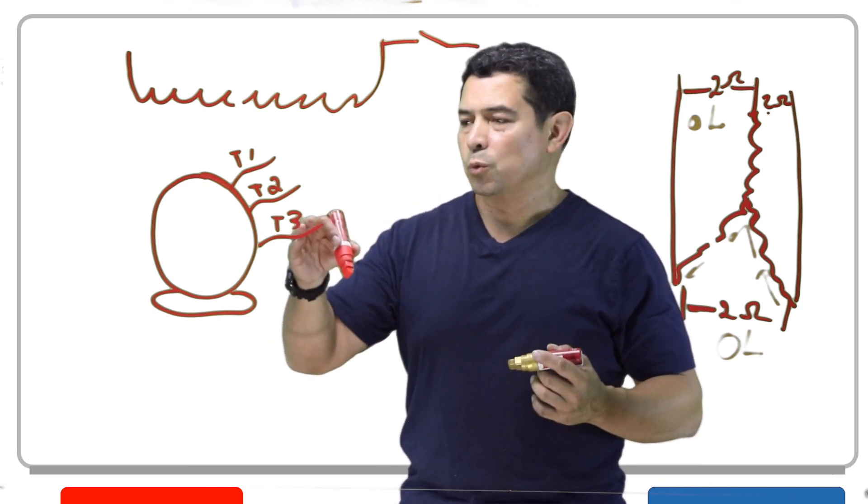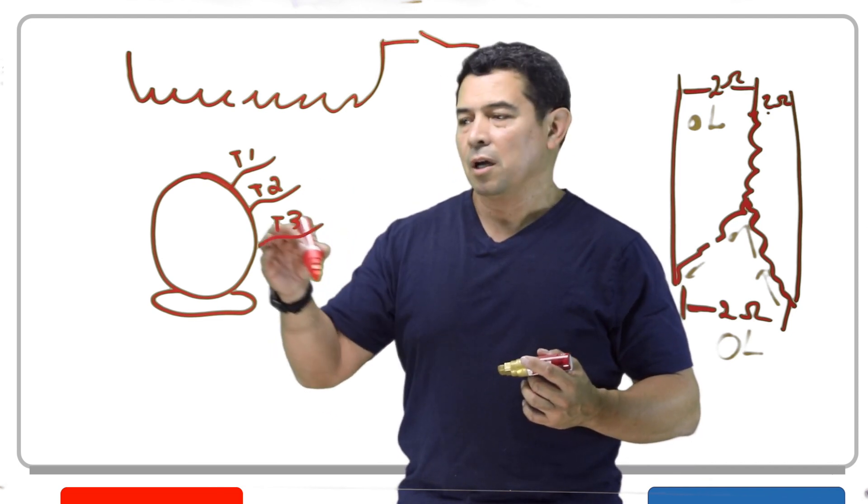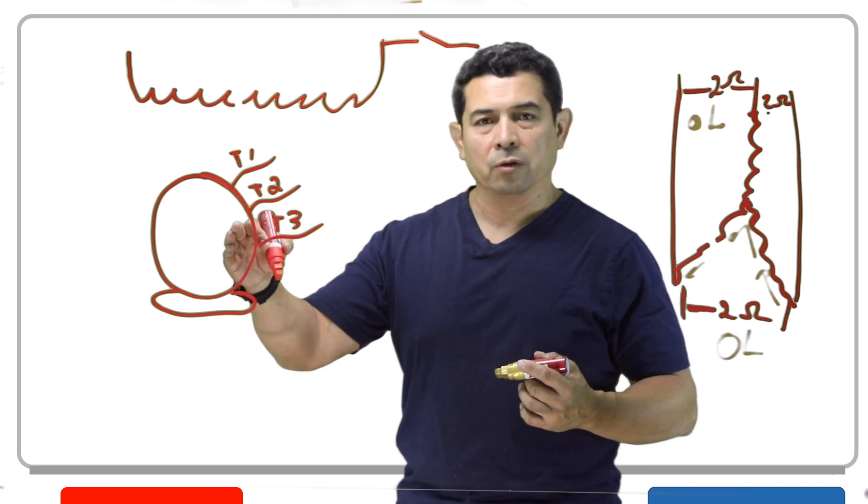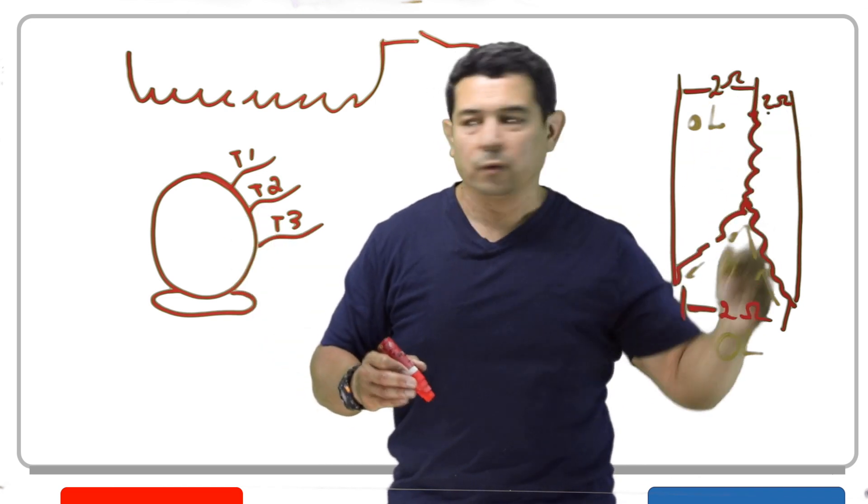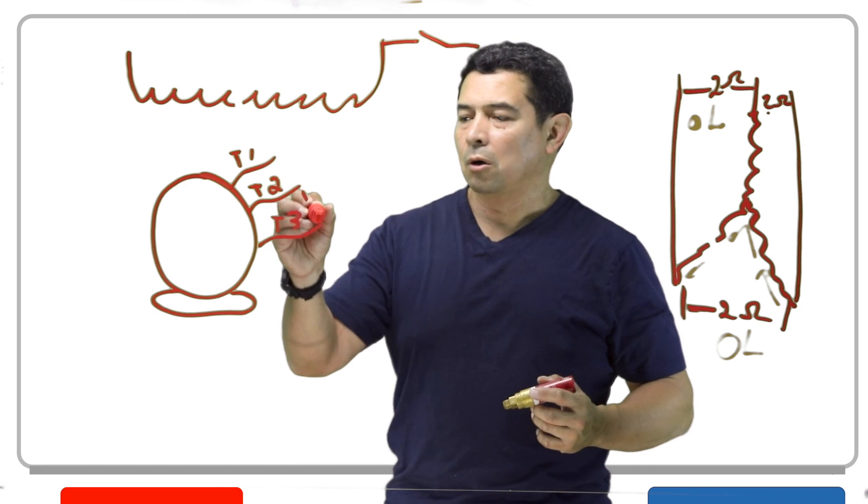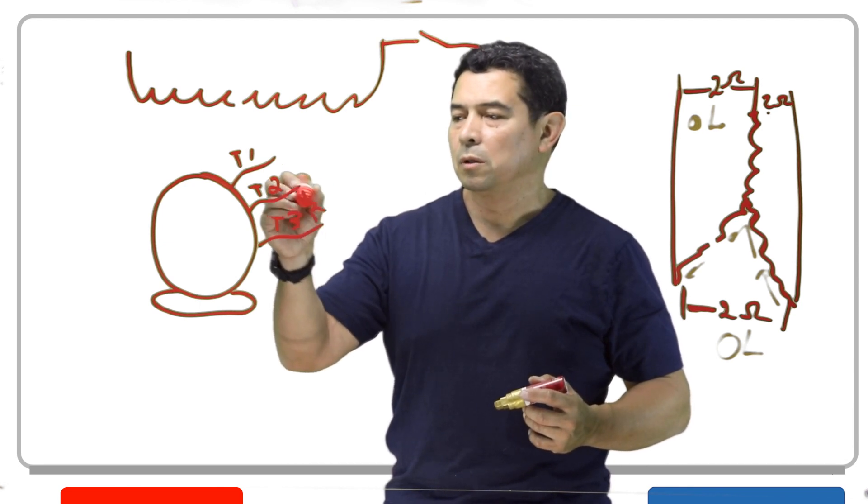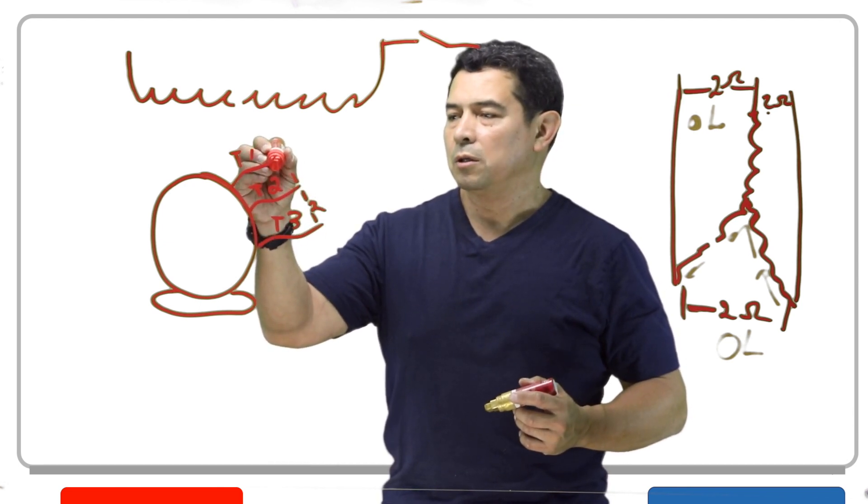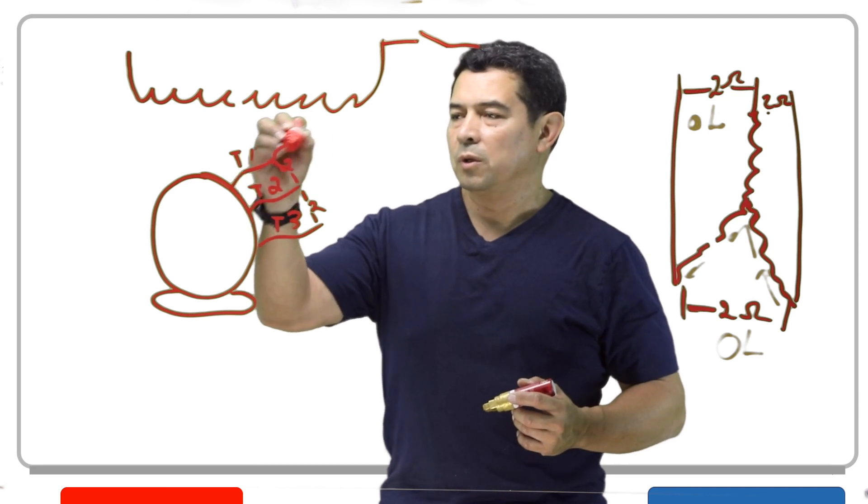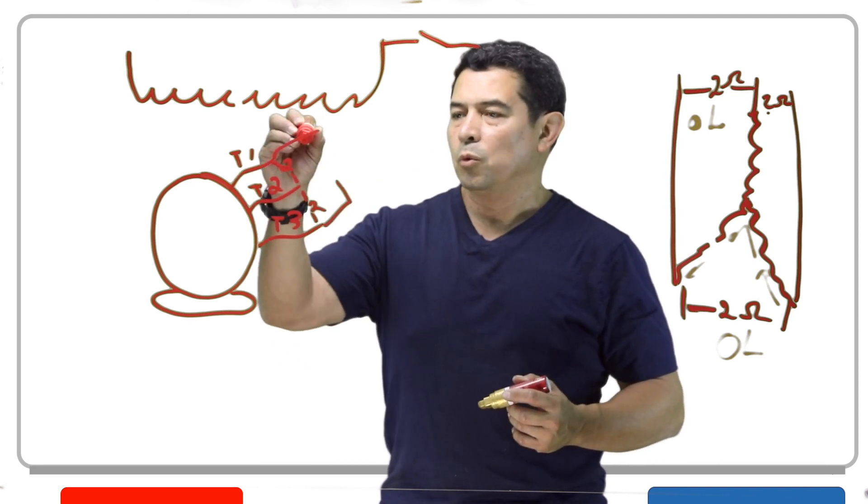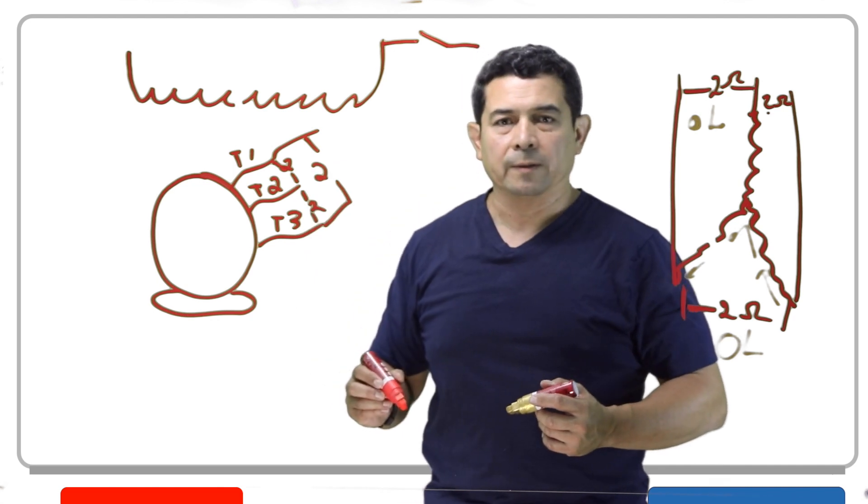So what we're doing here is we're checking across these and we want to make sure that we get the same two, two, and two across all of these right here. So this would be two ohms, this would be two ohms, and between here and here we would also have two ohms.